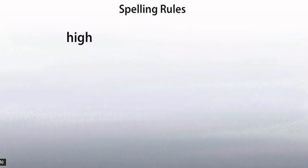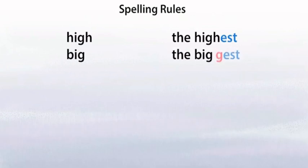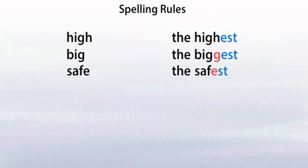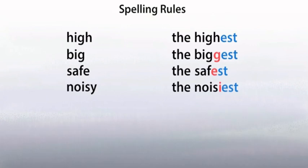Now, the superlative rules. 'High' becomes 'the highest.' 'Big' becomes 'the biggest.' If you look at the word 'biggest,' the adjective plus EST — we have to add another G because the adjective has three letters and in the middle we have a vowel. We have to add the last letter again before adding EST. 'Safe' becomes 'the safest' — we just add ST. 'Noisy' becomes 'the noisiest' — we have to delete the Y and add IEST.